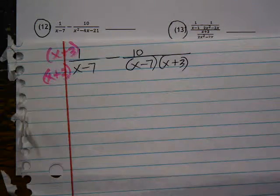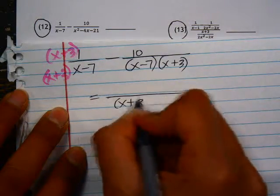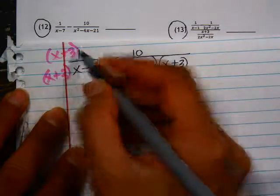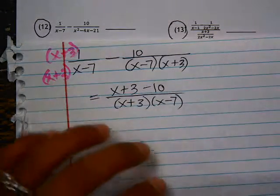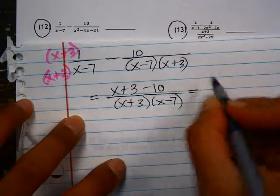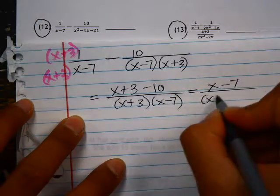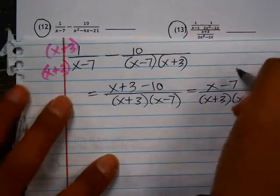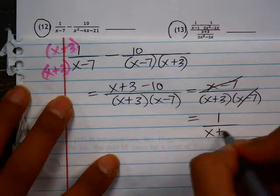Now we have a common denominator, which is x plus 3, x minus 7, and I can combine the fractions. x plus 3 minus 10. Combining like terms would be x minus 7 in the numerator, x plus 3, x minus 7 in the denominator. And then we can simplify. So these cancel, and we're left with 1 over x plus 3.